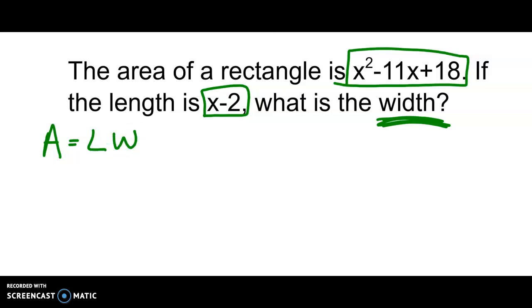But in this problem, we are trying to find the width, not the area. So think about what the opposite of multiplying is. If we're trying to find an area we multiply length times width, but if we're trying to find the width, we're going to take the area and divide it by our length.